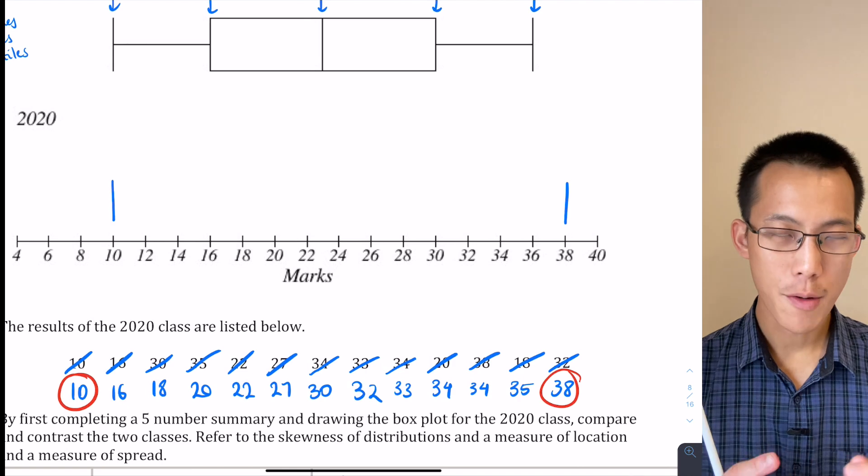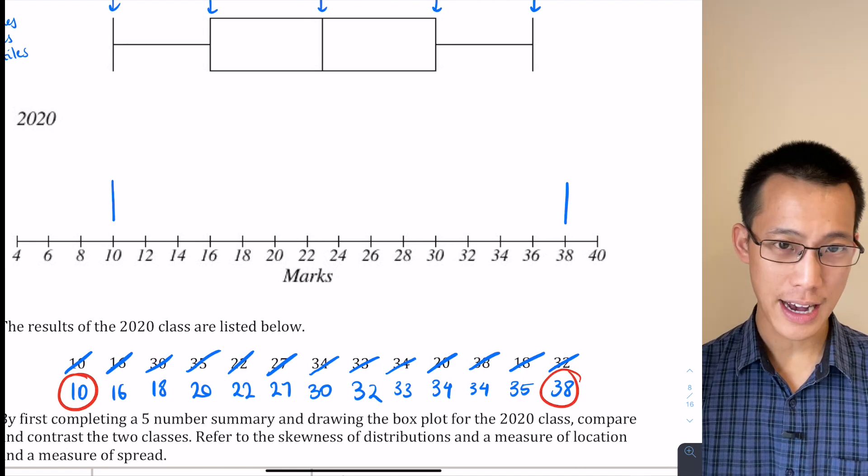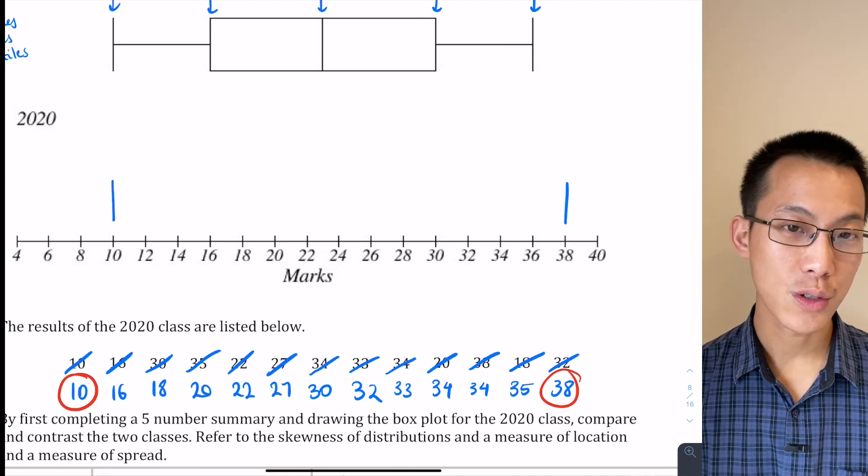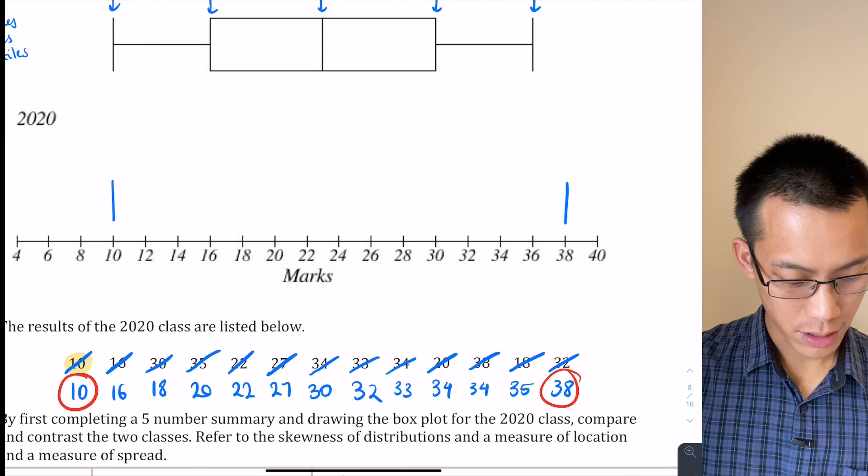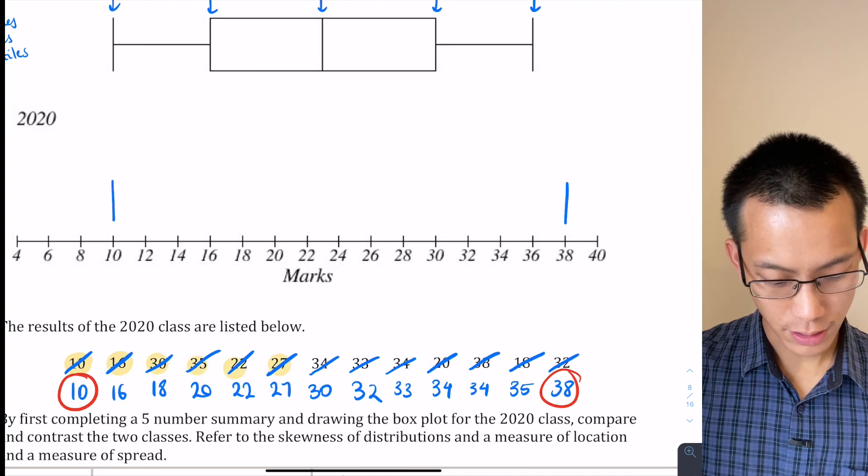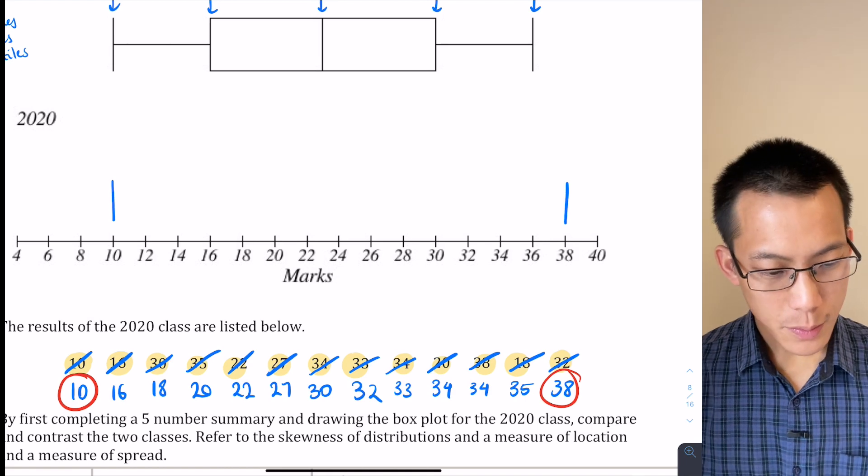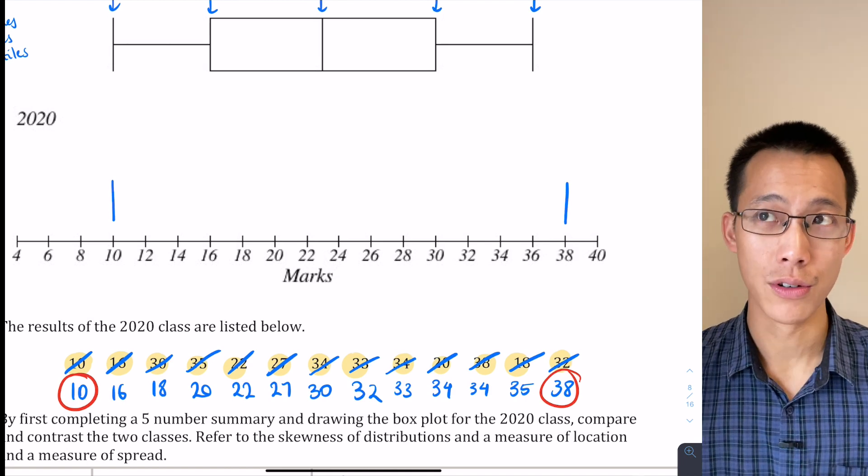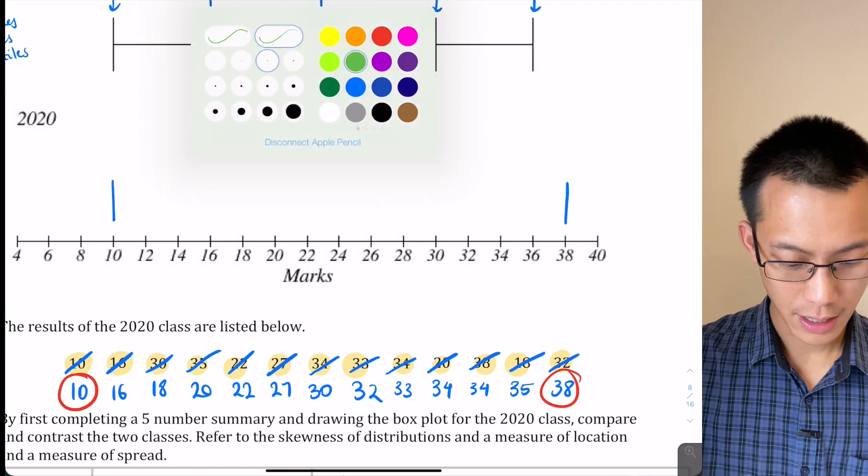So I've got my bottom score and my top score, that's good. But now to work out all the rest of them, I need to think a little more carefully. Remembering that the easiest one to find is the median because it just divides it into half, I need to know how many scores there are in total. So when I count it looks like 1, 2, 3, 4, 5, 6, 7, 8, 9, 10, 11, 12, 13.